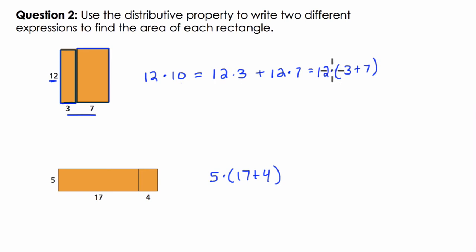Put a dot here—you don't need a dot here, but if you put 12 times parentheses (3 plus 7), that means 12 times the sum of 3 and 7. So 5 times the sum of 17 and 4...